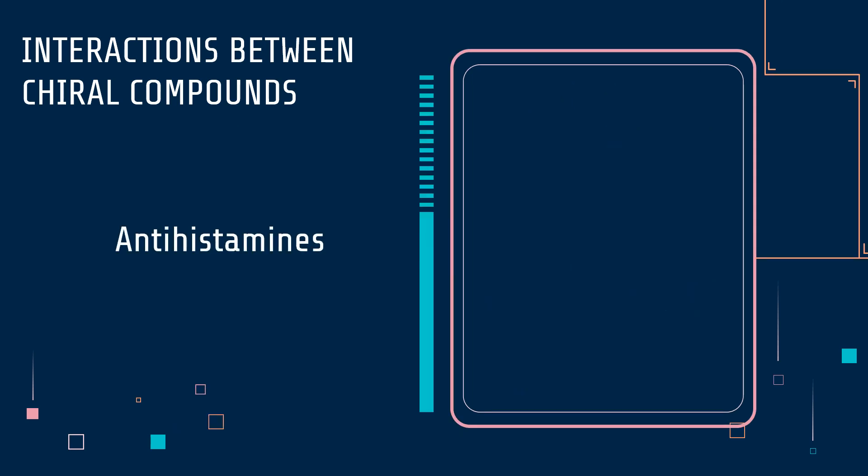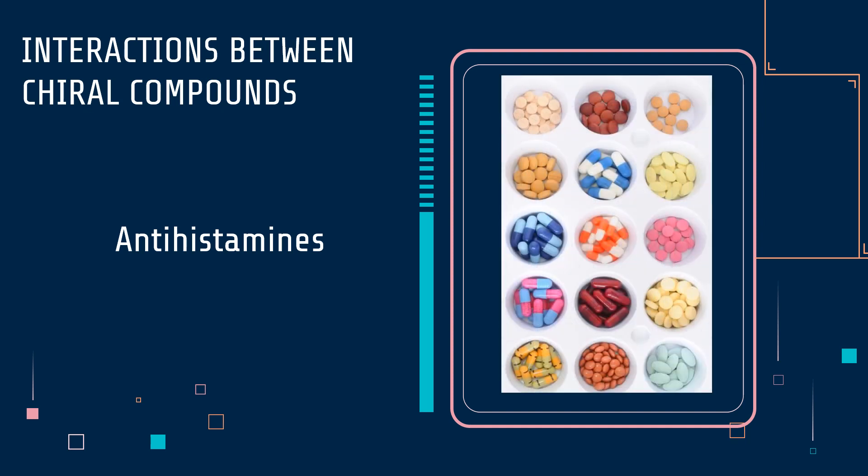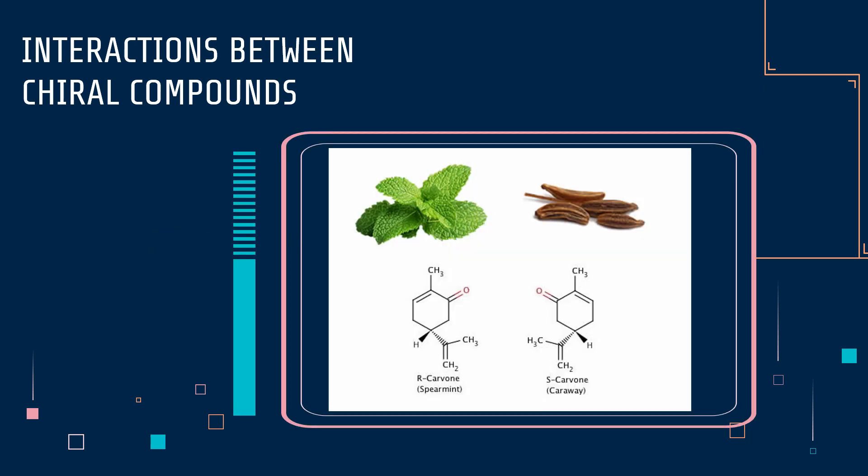Another example would be the antihistamines. Have you experienced to be drowsy or sleepy after taking an antihistamine for colds or allergies? This is actually a side effect of antihistamines being a mixture of enantiomers. One causes drowsiness while the other is a good decongestant. Another one would be the pair of enantiomers of carvone, which is present in the oils that give scent to spearmint and caraway seeds or dill. Our olfactory receptors in our nose detect these enantiomers as two different odors. Thus, our senses of smell and taste are responsive to chirality of molecules.